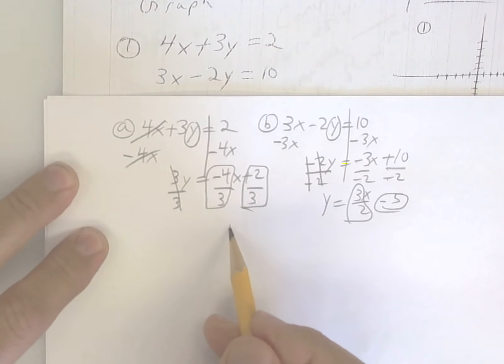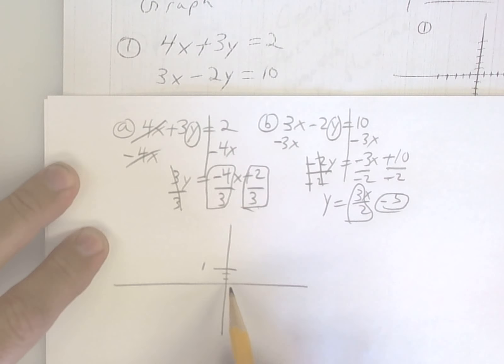So what you're going to do now is graph it. This one is up 2 thirds. Here's 1. 2 thirds means you've got to break it into 3 pieces. 1, 2, 3. So 2 thirds would be 1, 2 pieces.